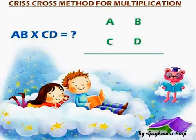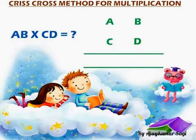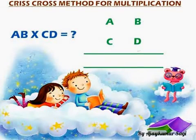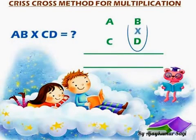Now we have to find the solution for A, B, C, D. First, from the right side vertical digits, multiply the right side vertical digits — that is B into D. B into D we get BD.